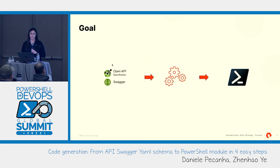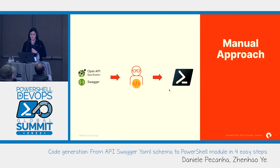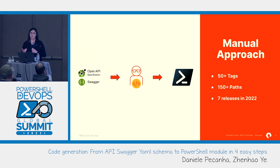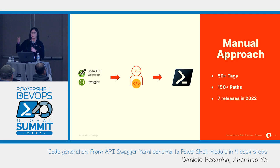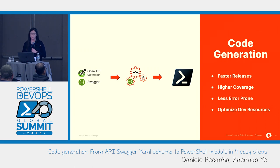Our goal: we have an OpenAPI specification schema provided by the team that creates the REST APIs, and we want a PowerShell module at the end with a REST client. We could do a manual approach — we know how to write PowerShell scripts and make REST calls — but we have over 150 paths and seven different releases last year alone. That would be very hard to keep up to date. So we decided on code generation, which makes the process faster and more reliable.